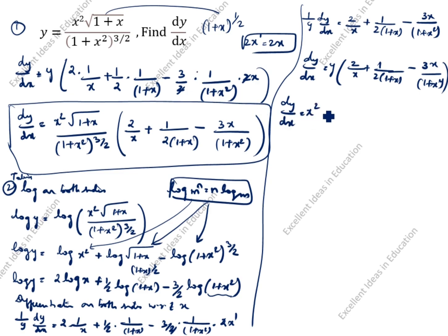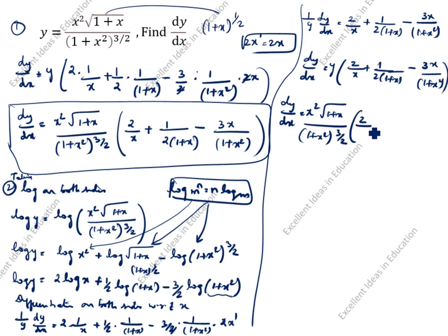Substituting y: dy by dx equals x times square root of (1 plus x) divided by (1 plus x squared) to the power 3 by 2, times open bracket 2 by x plus 1 by (2(1 plus x)) minus 3x by (1 plus x squared). This is the final answer from the second method.